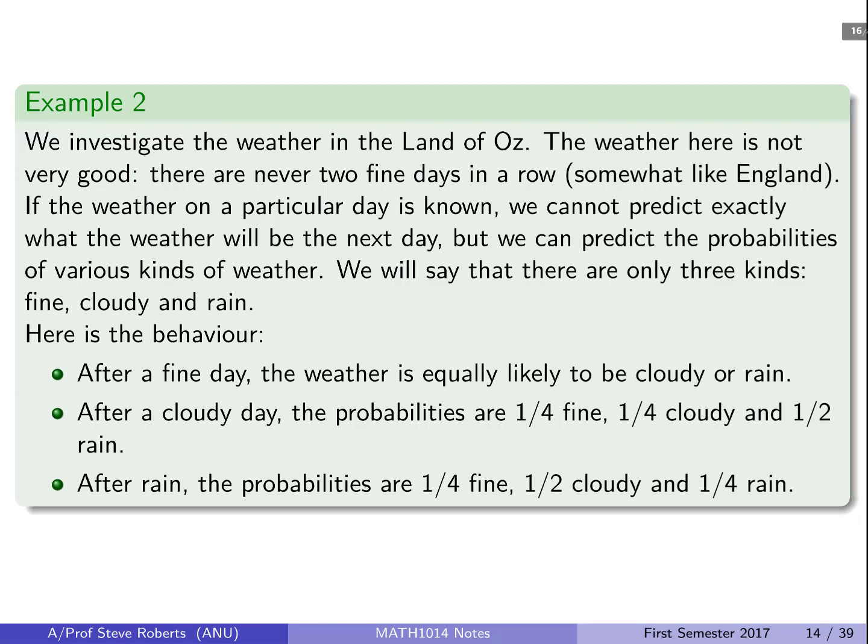OK, so let's have another simple example. This is a weather example. So the idea is that we basically have three types of weather: fine, cloudy, or rain.